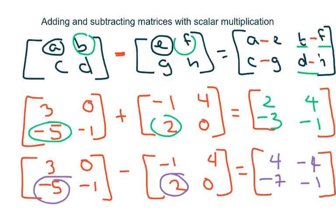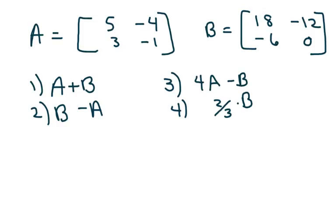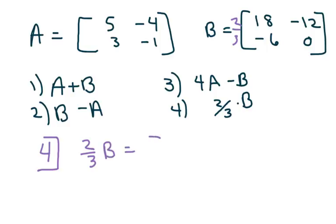It's pretty easy. The next thing we're going to do is have two matrices and we're going to add them and also do scalar multiplication. Basically when you multiply — for example, let's do part four first — we're taking matrix B and multiplying it by two thirds.